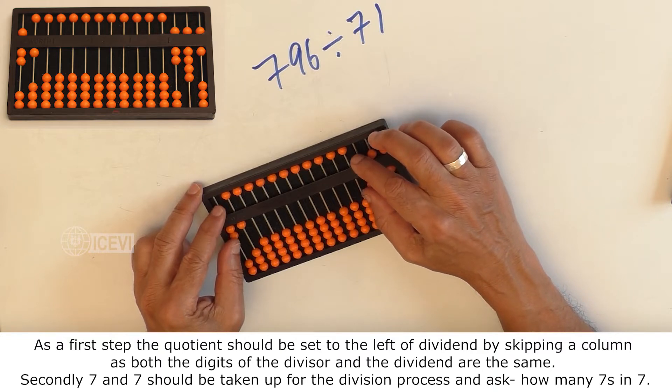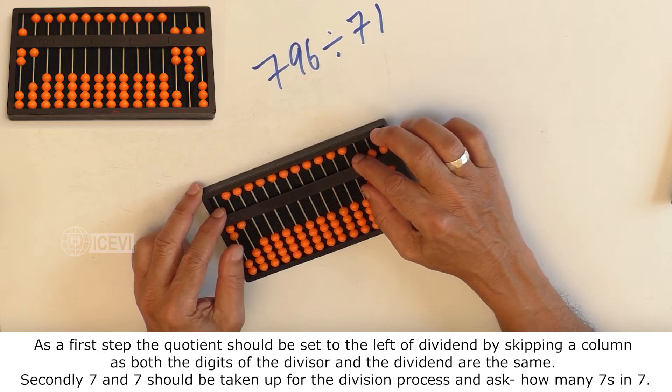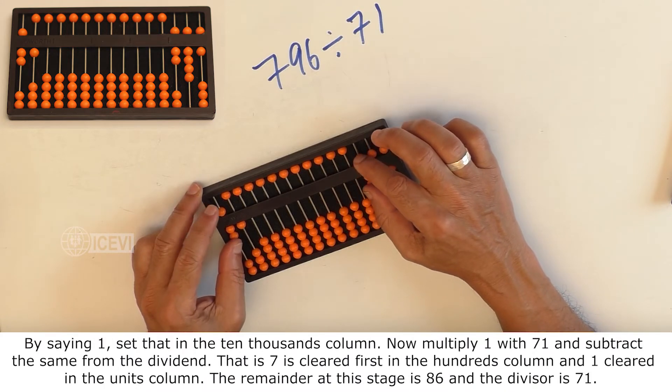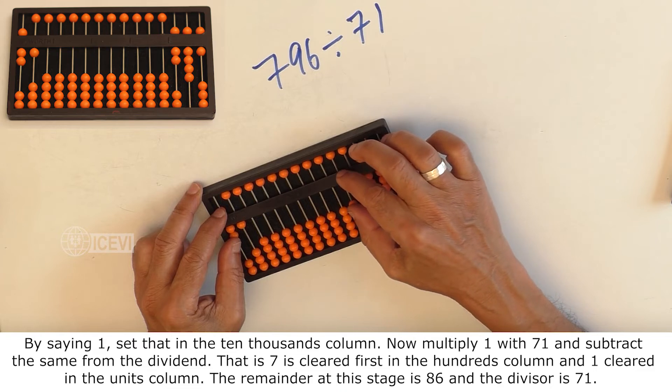Secondly, 7 and 7 should be taken up for the division process and ask, how many 7s in 7? By saying 1, set that in the 10,000th column.